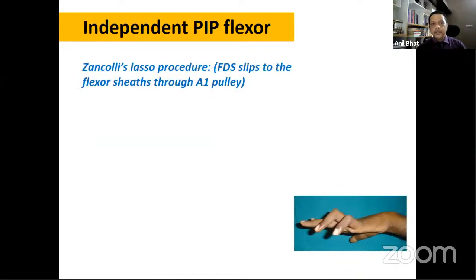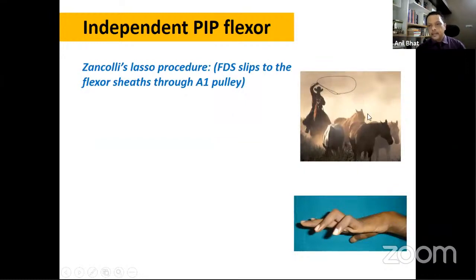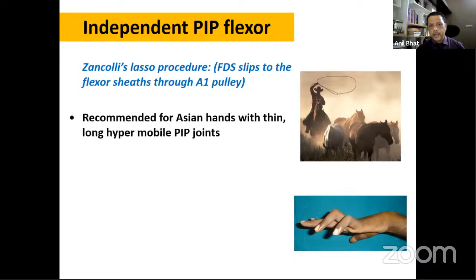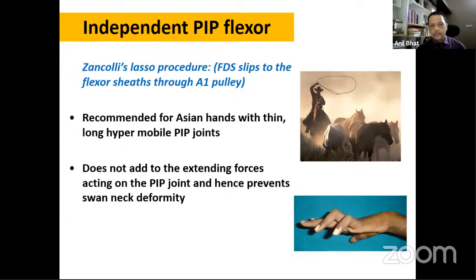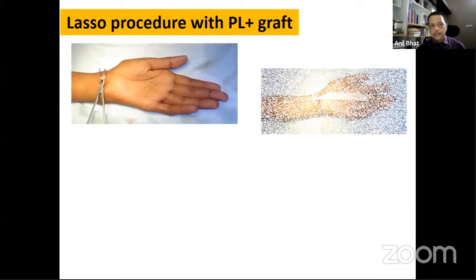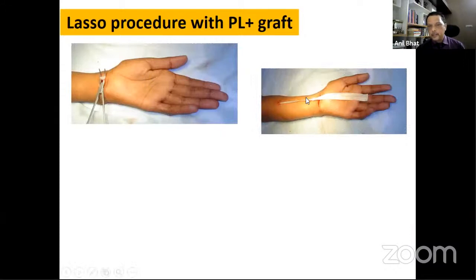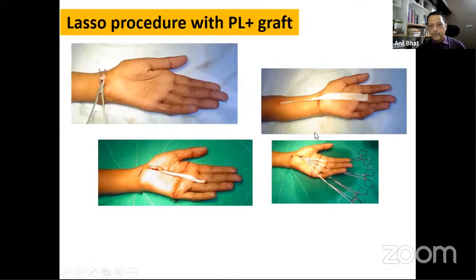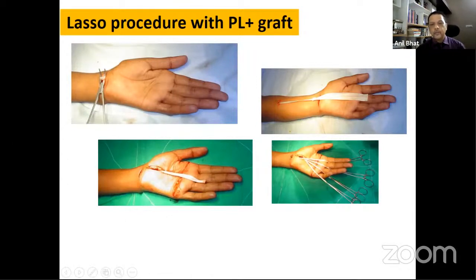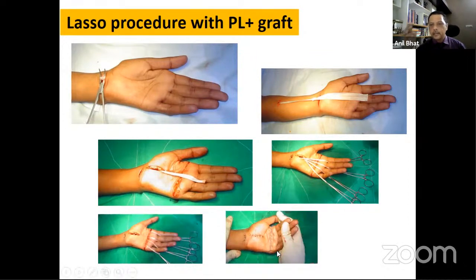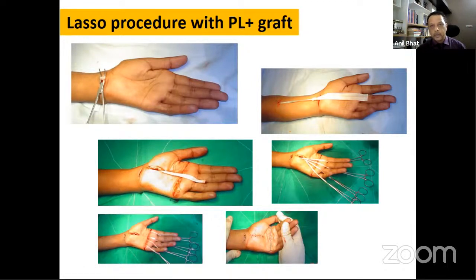The Zancolli lasso procedure uses FDS slips looped around the A1 pulley — like a lasso — creating a PIP flexor that also produces MCP flexion. It is recommended for Asian hands with thin, long, hypermobile PIP joints as it does not add to the extending forces on the PIP, thus preventing swan neck deformity. A palmaris longus with tensor fascia lata graft can also be split into four slips passed through the A1 pulley and sutured back on themselves to restore the metacarpal arch.